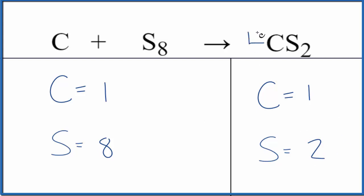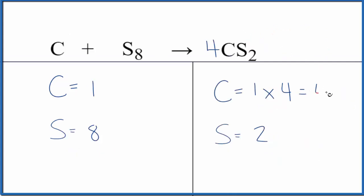Let's put a four as our coefficient in front of the CS2. This four goes to everything. So one carbon times four will give us four, but two times four, two sulfurs times four, that'll give us eight. So we've balanced the sulfur atoms.